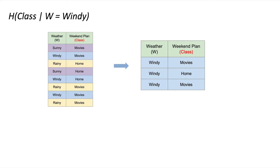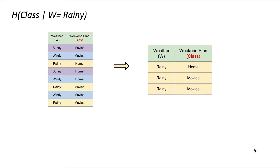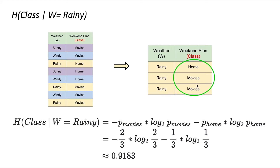Now, the entropy of the class when weather is windy: we select the blue rows. We have two cases for movies out of three and one case for home out of three, so the proportions are two-thirds and one-third. Applying the entropy formula gives us that value. Finally, for weather equals rainy, we select the yellow rows — again two for movies and one for home, giving the same proportions two-thirds and one-third.